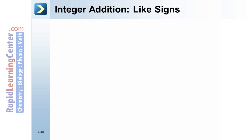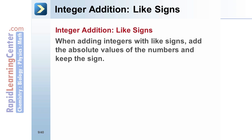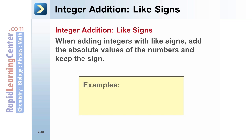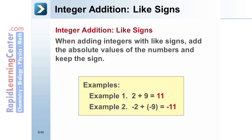Integer Addition — Like Signs: When adding numbers with like signs, add the absolute values of the numbers and keep the sign. Example 1: 2 plus 9 equals 11. Example 2: Negative 2 plus negative 9 equals negative 11, because two negative numbers are being combined.